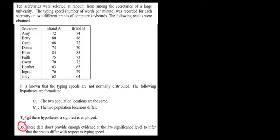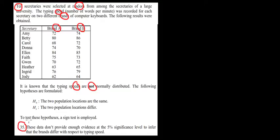Let's have a look at question 35. We have 10 secretaries selected at random from a large university. The typing speed, measured in number of words per minute, was recorded for each secretary on two different brands: brand A and brand B. We have 10 secretaries and these are the data. We also know that the typing speeds are not normally distributed. The following hypothesis will be discussed, and to test it, a sign test is employed.